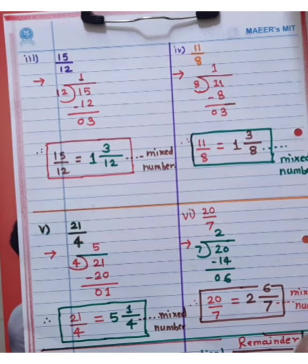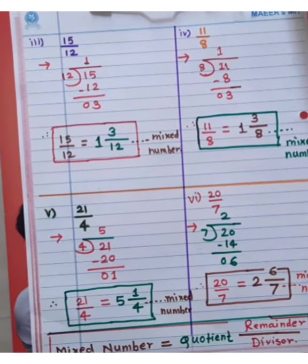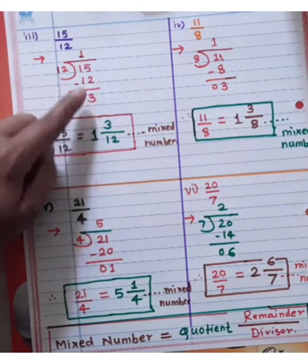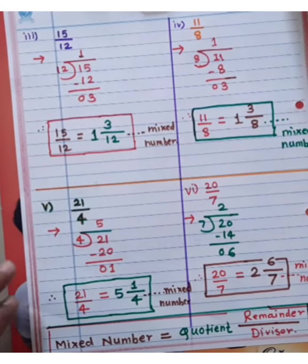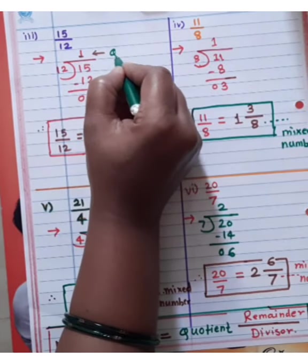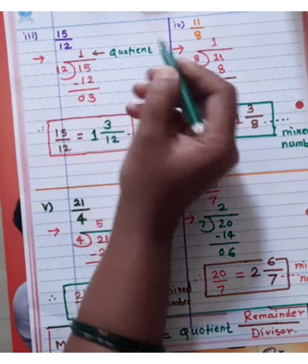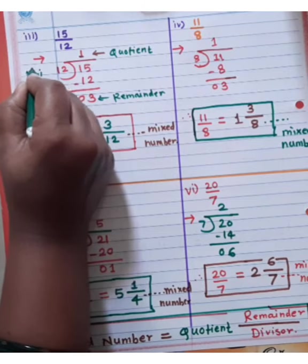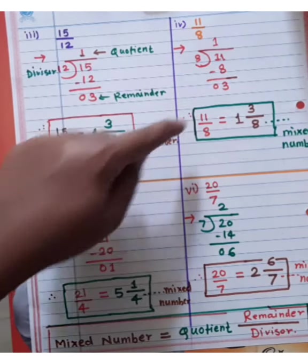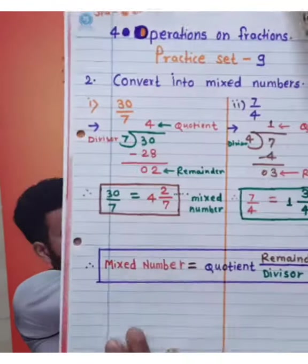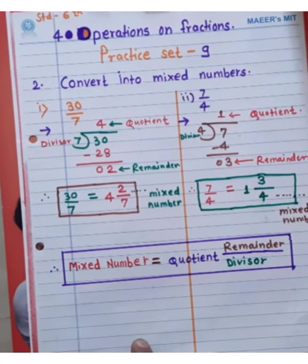Do you understand student, how to convert the improper fractions into mixed numbers? Okay, thank you.